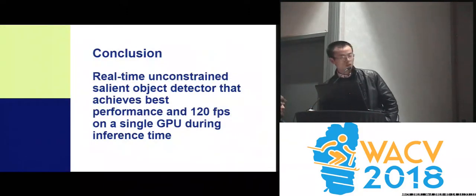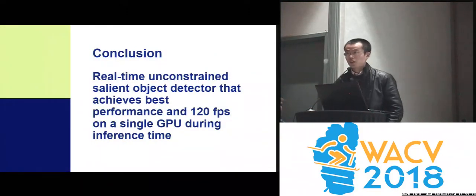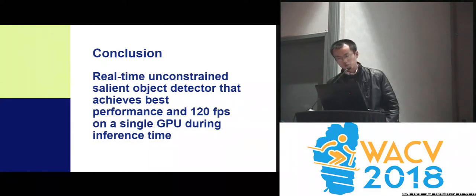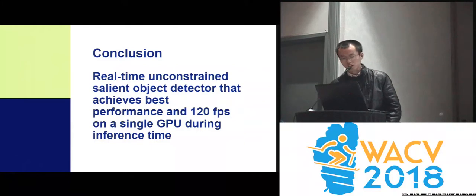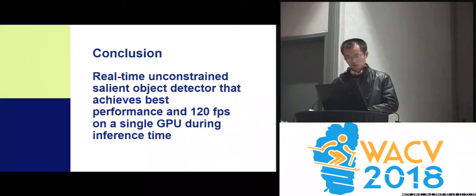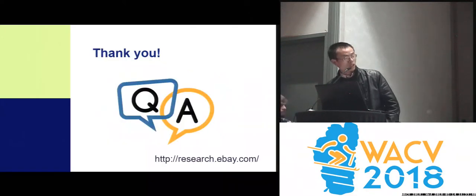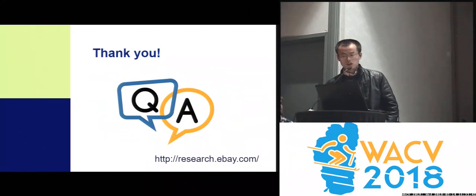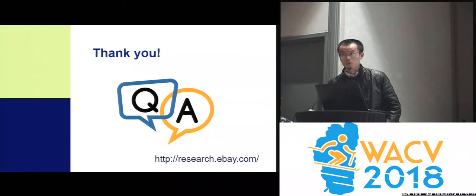To conclude, we have presented a real-time unconstrained salient object detection framework. Our network performs saliency map prediction and salient object subtizing simultaneously in a single pass within a unified framework with real-time performance. If you have any questions, please visit our poster or visit research.ebay.com to contact the authors. Thank you very much.